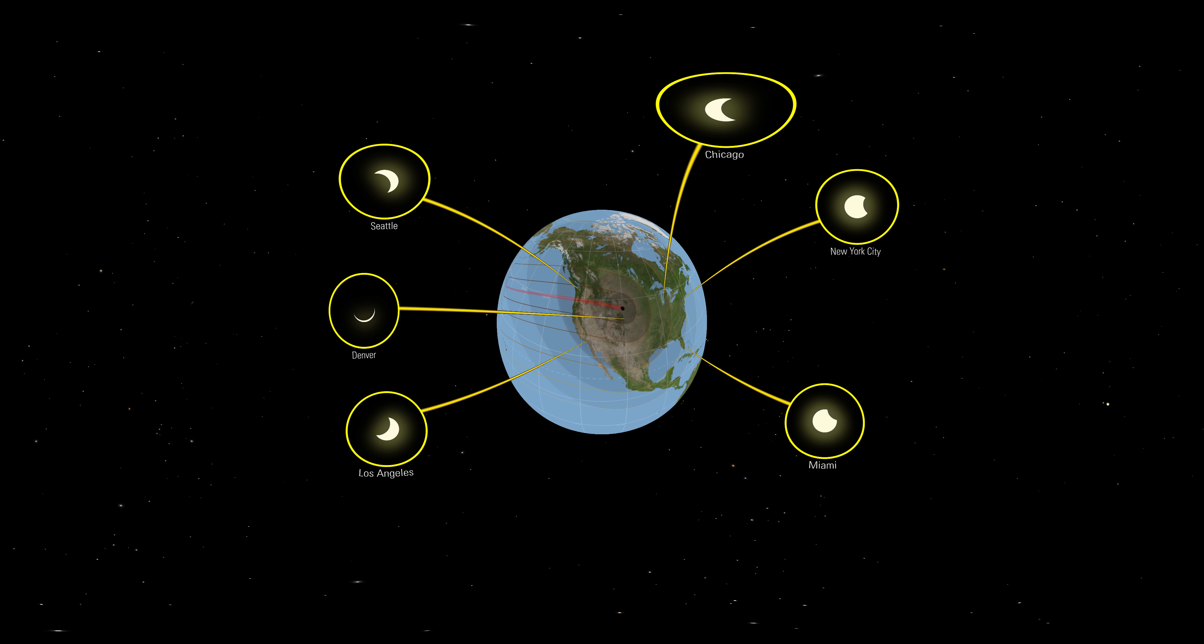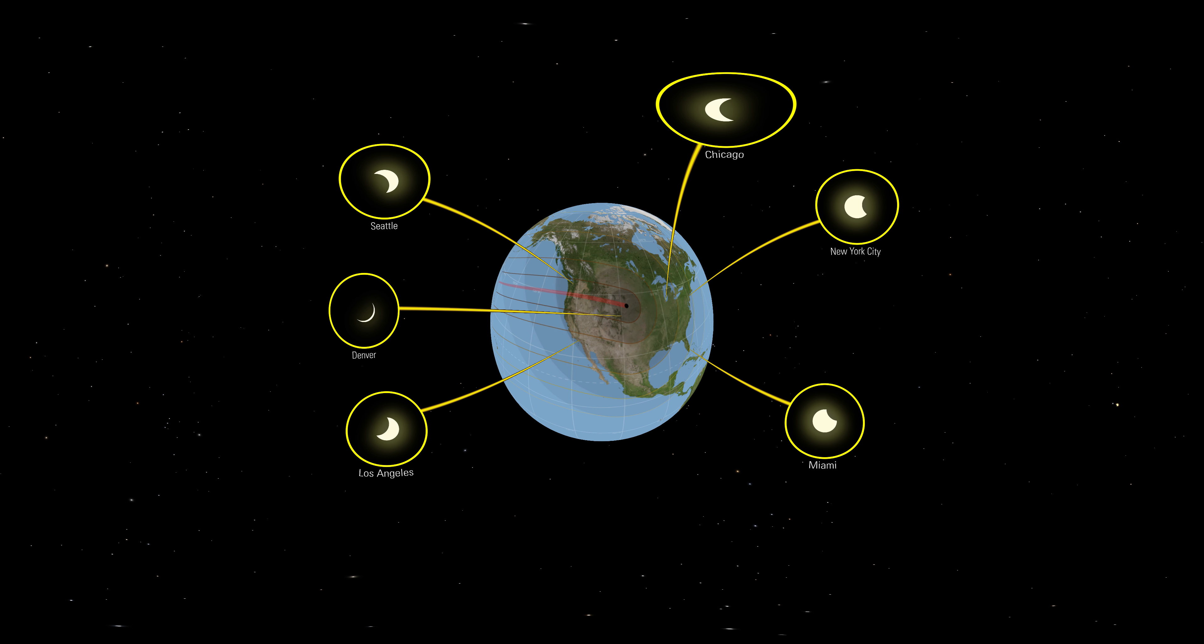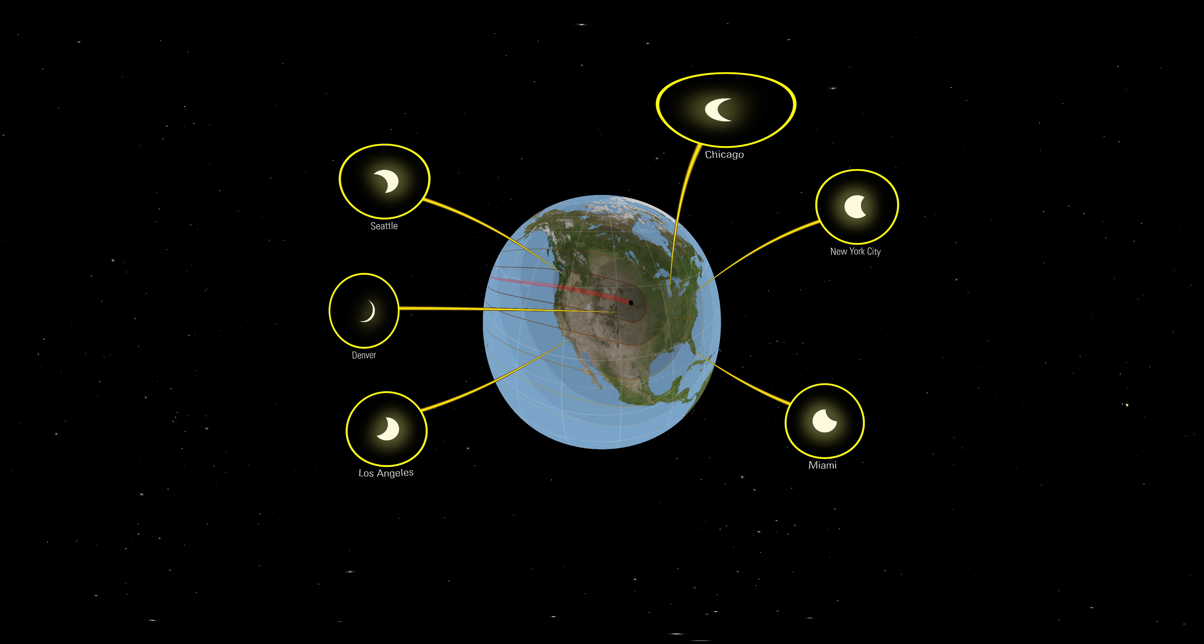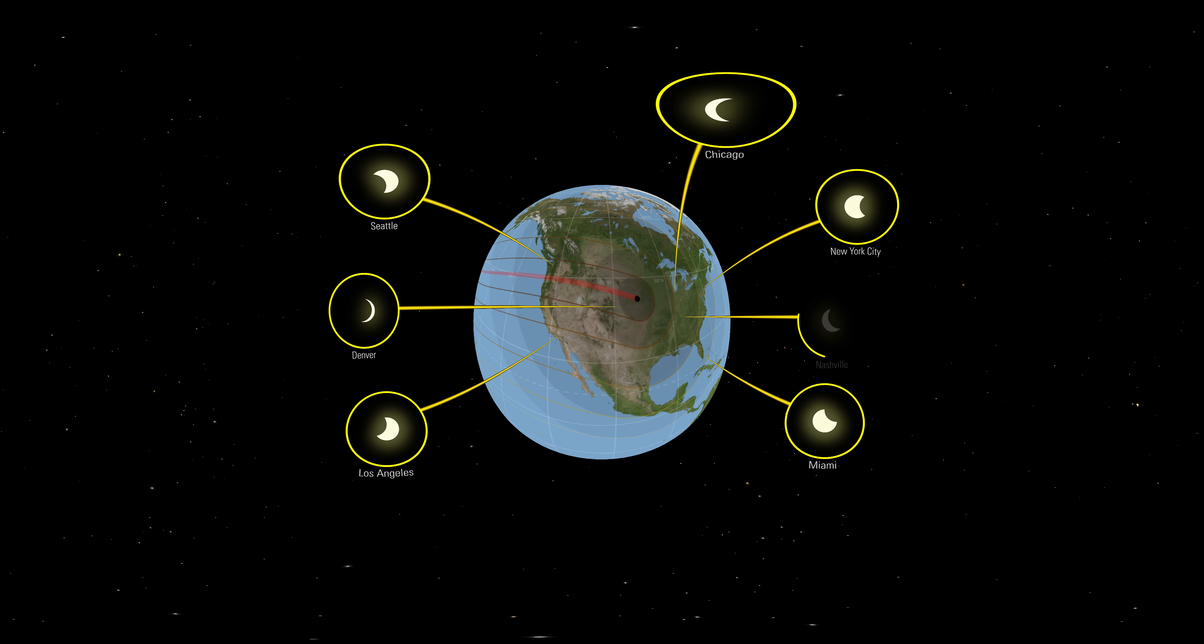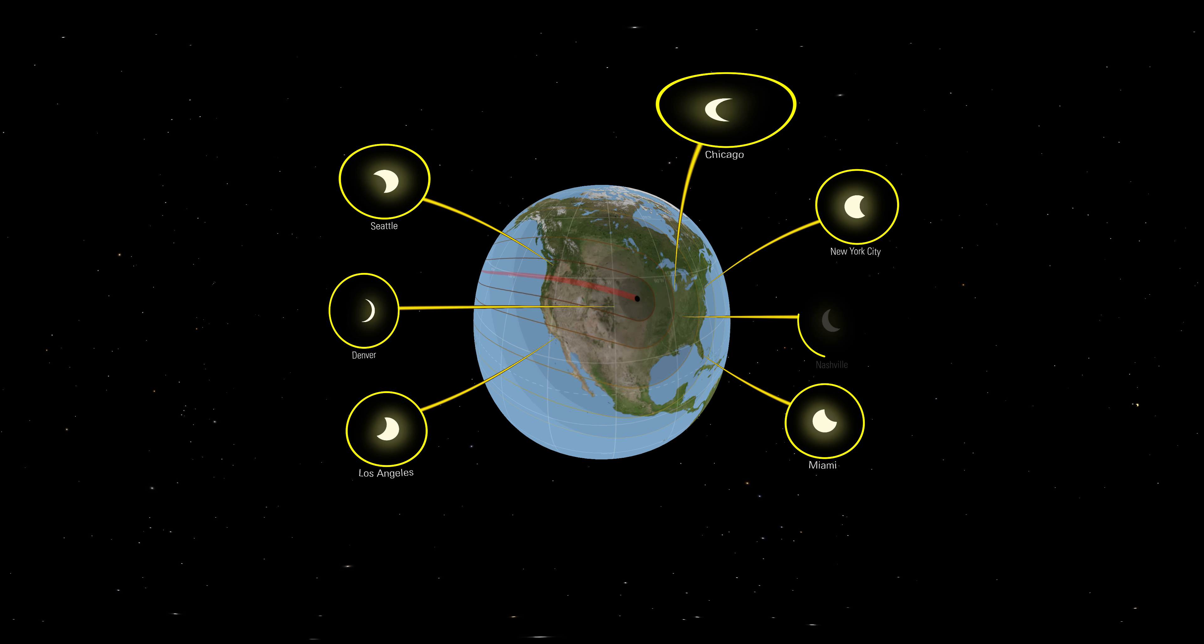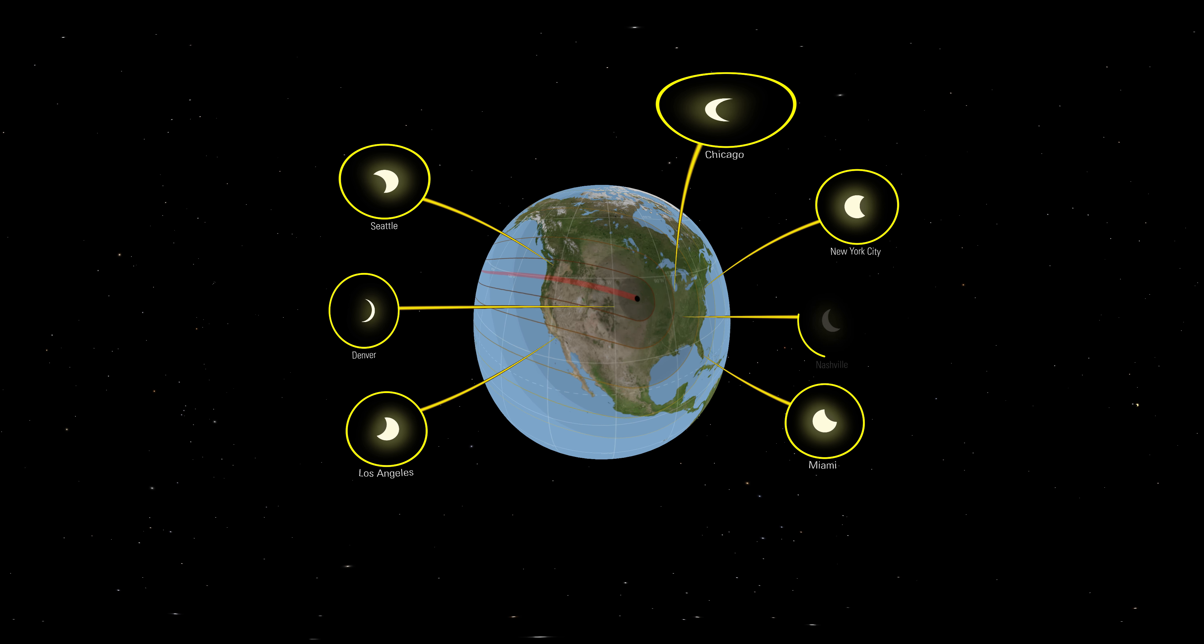Total solar eclipses occur when the Earth, Moon, and Sun line up just right, and the Earth falls within the shadow of the moon. The moon's shadow is very small, so you need to be in just the right place on Earth to see it.